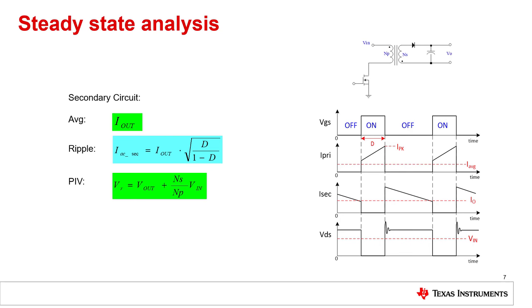On the secondary side, the average current equals the output current. This, the ripple current and the peak inverse voltage are needed to select the diode. So the steady state analysis gives us all formulas to calculate and select the components for the power stage of a flyback converter.